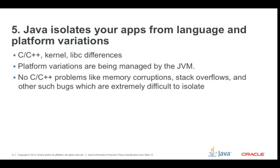Number five: Java isolates your apps from language and platform variations. On various platforms, C or C++ may not be the same — the kernel might be a little different, or there can be libc differences. The nice thing is that the Java Virtual Machine manages those platform variations, so you don't have to worry about that. Gone are the problems of memory corruption, stack overflows, and other types of bugs that are extremely difficult to isolate.